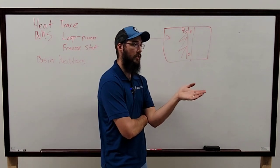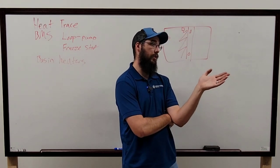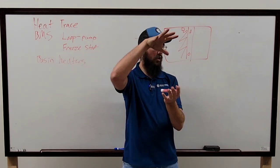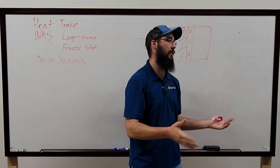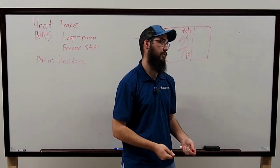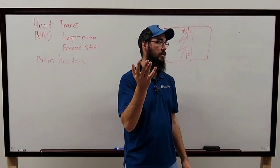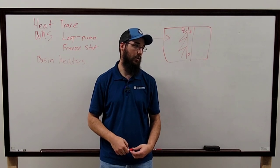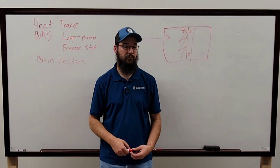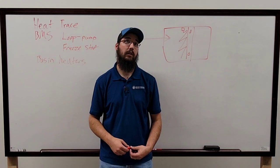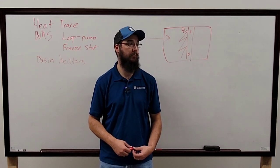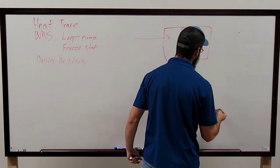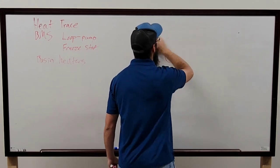It's common for buildings — whether they use hot water or electric heat — to have a heater installed where the VAV is controlling outside air into the air handler in the mechanical room. Once it drops below a certain temperature, it heats that space up. Not very many people have us do maintenance on their outside air heaters, but they're definitely there.